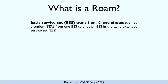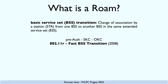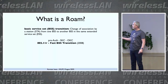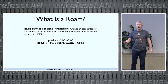Roaming — the change from one AP to the other — can take some time depending on the connection method that we use. We have a couple of methods to speed it up, and the best one is, of course, fast BSS transition based on 802.11R.